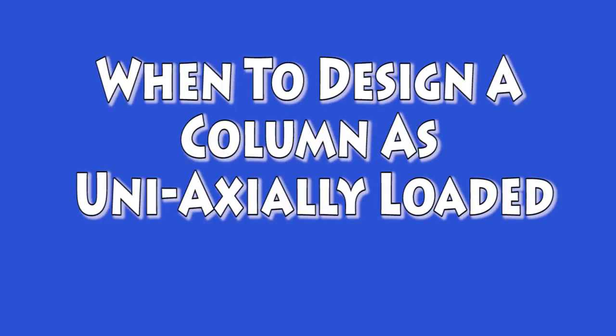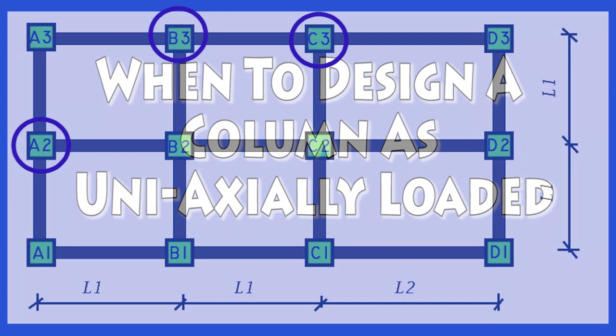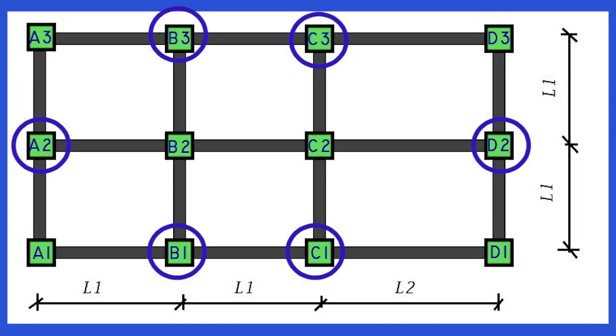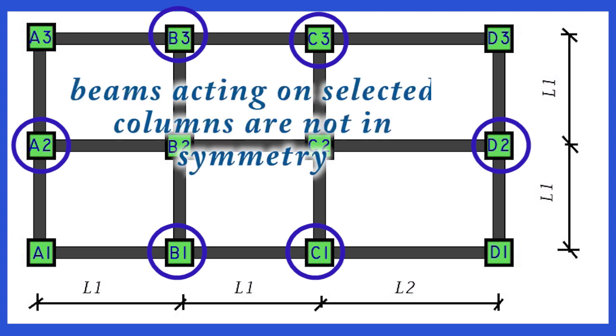When to design a column as uniaxially loaded. Columns A2, B1, B3, C1, C3, and D2 support an arrangement of beams that is clearly unbalanced in both of its axes,